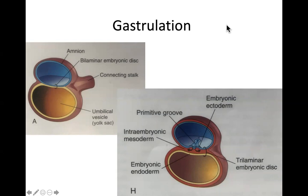Aloha. Welcome to lecture five, where we're going to talk about the third week of development. The first thing we're going to talk about is gastrulation. To put it very simply, gastrulation is the process of converting a bilaminar embryonic disc into a trilaminar embryonic disc.